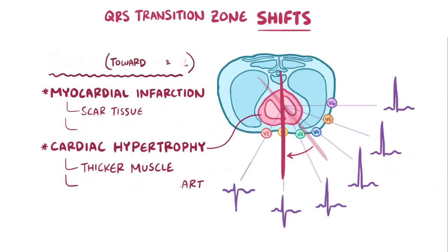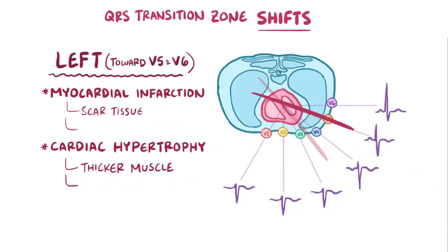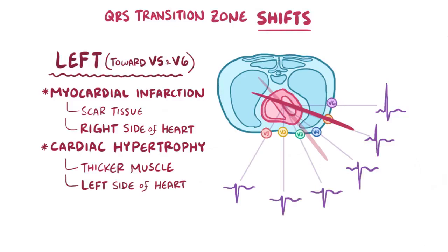On the flip side, there can also be a shift to the left, toward V5 and V6, and this can have the same causes, except this time it would be a myocardial infarction on the right side of the heart, or hypertrophy on the left side of the heart.